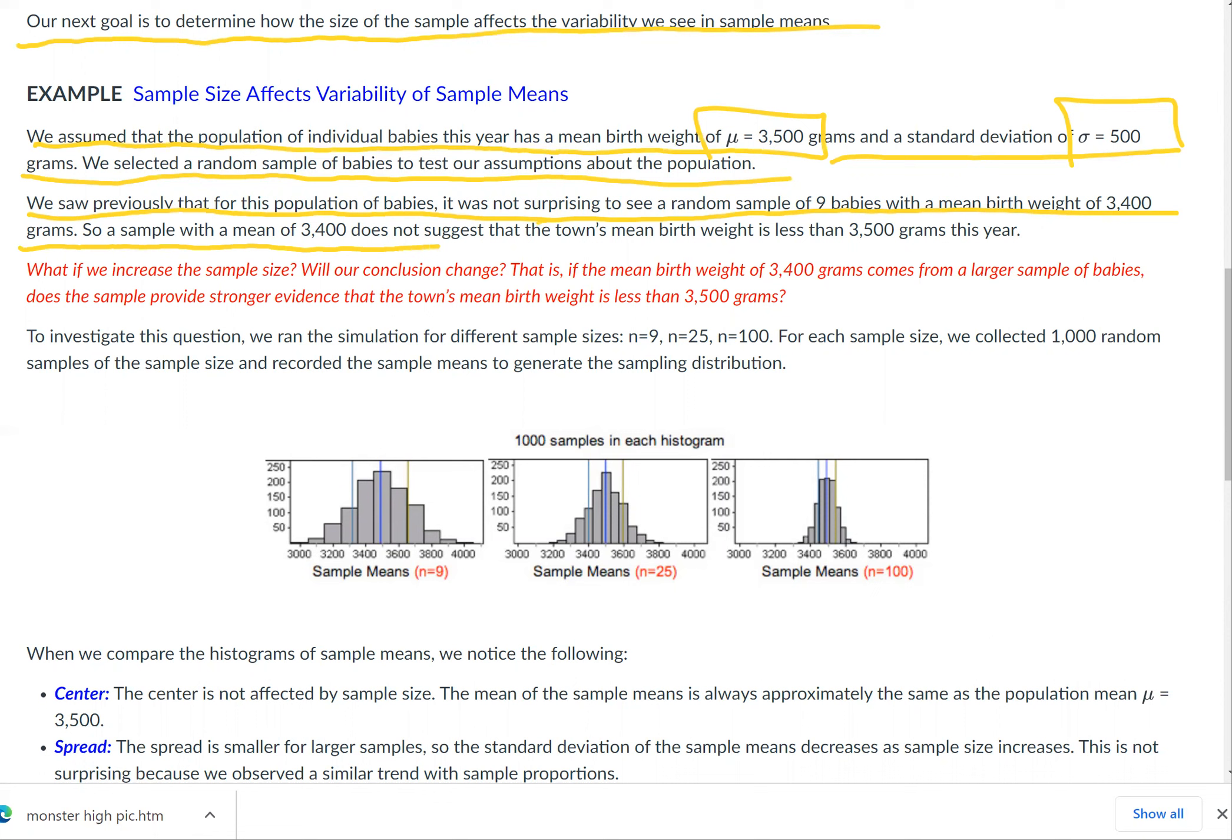So a sample with a mean of 3,400 does not suggest that the town's mean birth weight is less than 3,500 grams this year, because there were only nine babies.